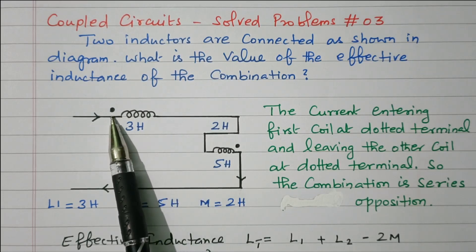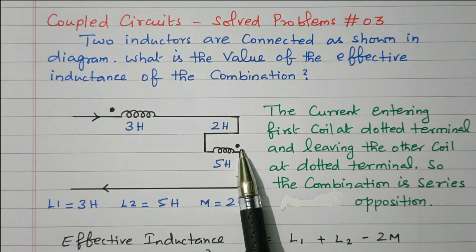The dot is available here for coil 1. For coil 2, the dot is available at the other end.